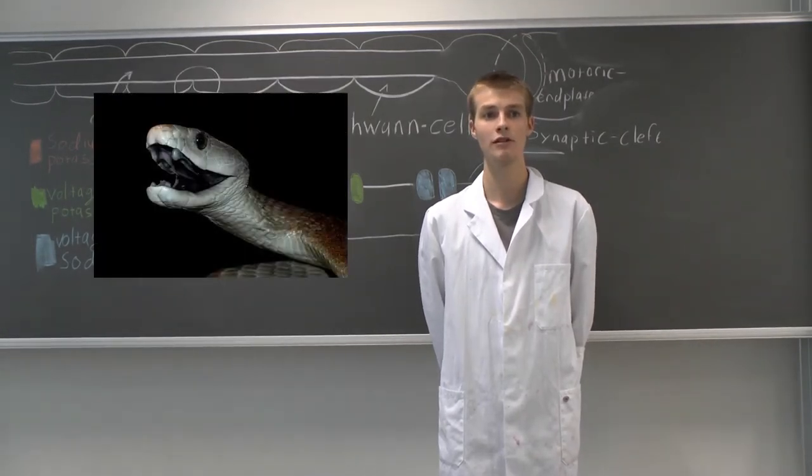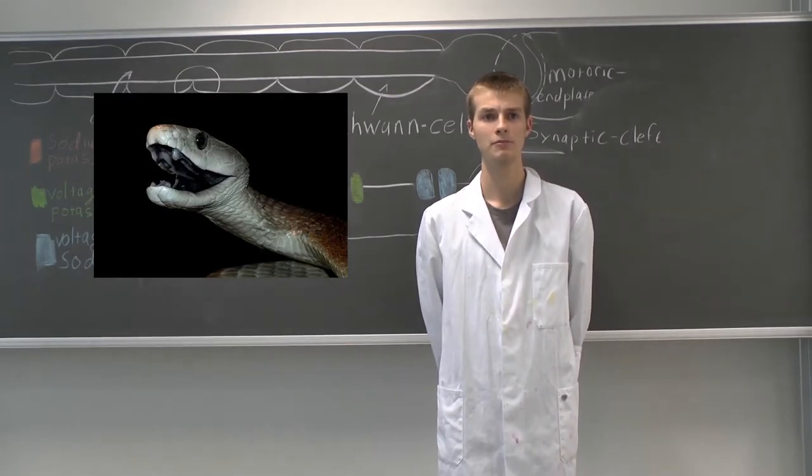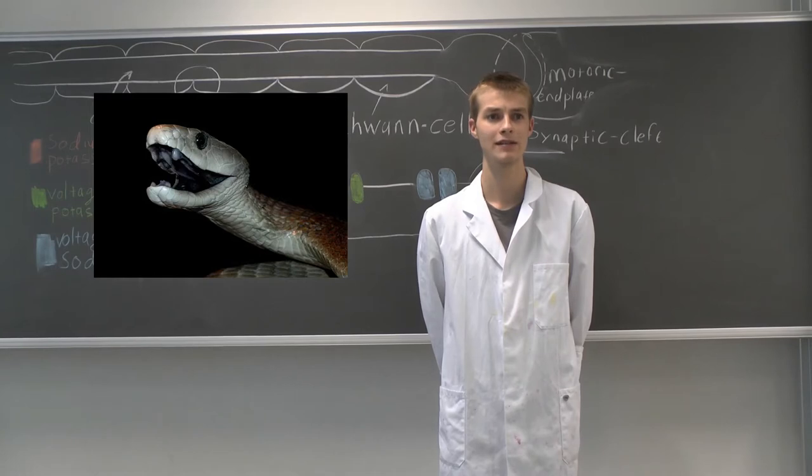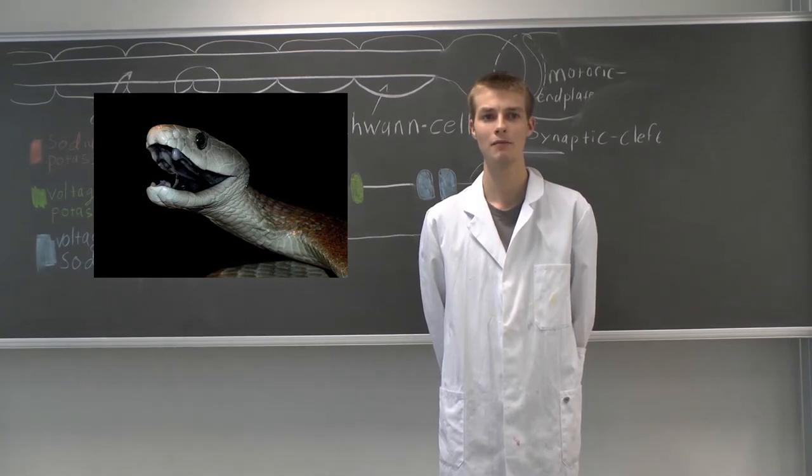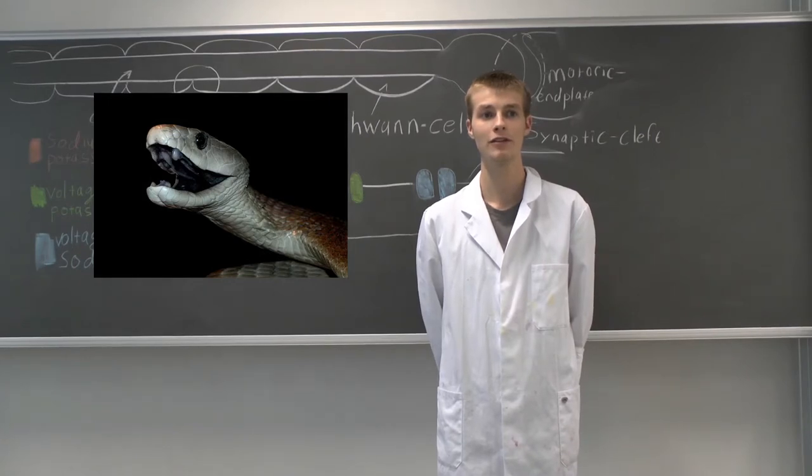Black mambas are generally between two and three meters long. The venom is produced by modified salivary glands and is injected into the victim by biting. The deadly venom is composed of different toxins.